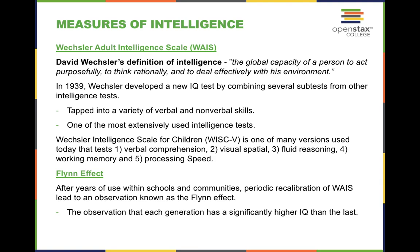David Weschler defined intelligence as the global capacity of a person to act purposefully, to think rationally, and to deal effectively with his environment. He developed a new IQ test by combining several subsets from other intelligence tests. The main takeaway here is the Flynn effect — after years of use and periodic recalibration of the Weschler test, researchers observed that each generation has a significantly higher IQ score than the last, suggesting we continue to get smarter with each passing generation.